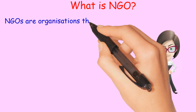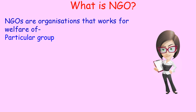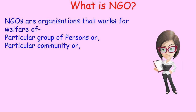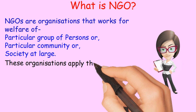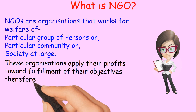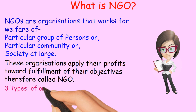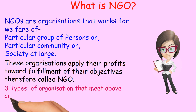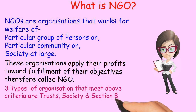What is an NGO? NGOs are organizations that work for the welfare of a particular group of persons, a particular community, or society at large. These organizations apply their profits toward the fulfillment of their objectives, and therefore they are called NGOs. Three types of organizations that meet the above criteria are Trusts, Societies, and Section 8 Companies.